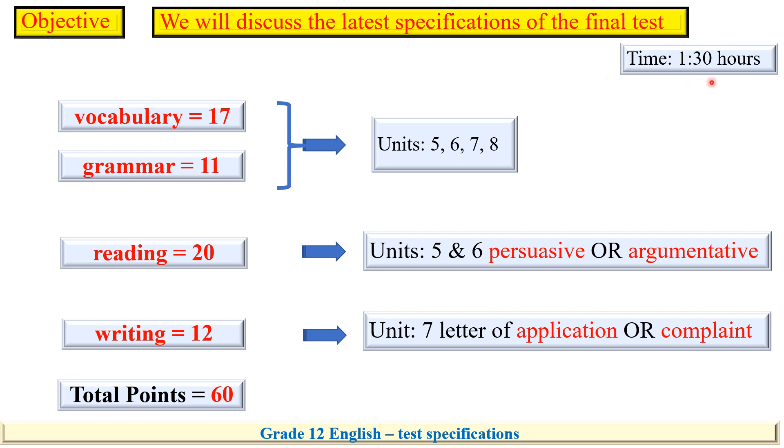Time is one and a half hours. You will find questions under four categories. The vocabulary is for 17 points, grammar 11 points, reading 20 points, and writing is for 12 points. These are the 60 points of your test paper.